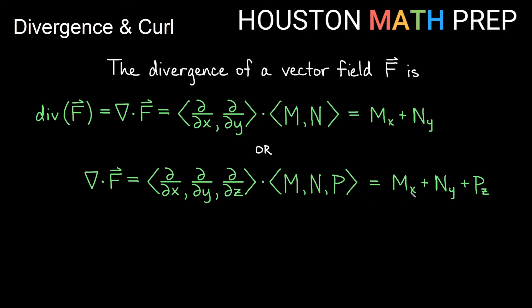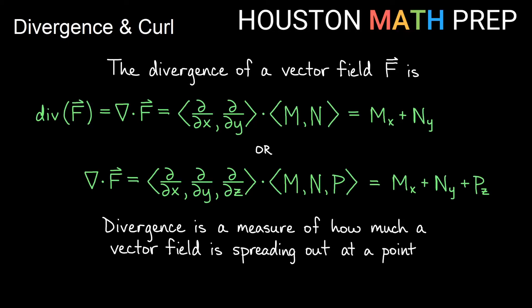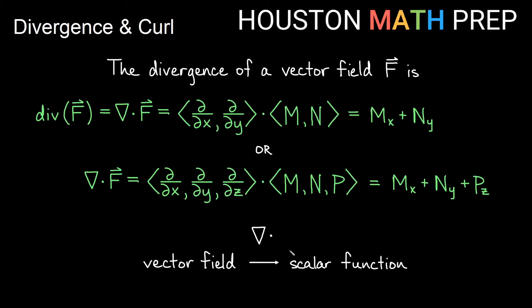The three-dimensional divergence expression mx + ny + pz is used to find flux through a surface in what's called the divergence theorem. Divergence is a measure of how much a vector field is spreading out at a point, which is why it tells us about flux. As an operation, divergence takes a vector field as input and gives a scalar function as output — notice the dot product adds all components together, so we don't get a vector out.